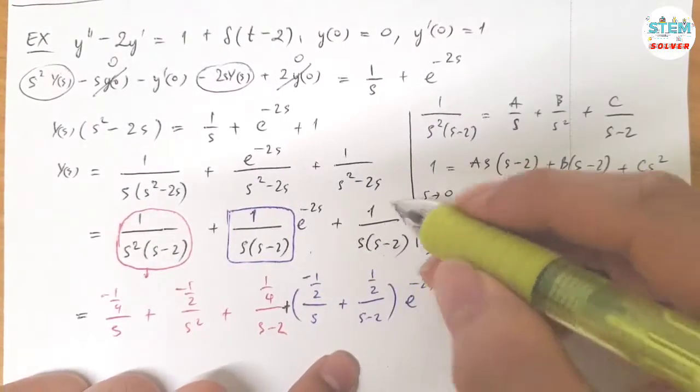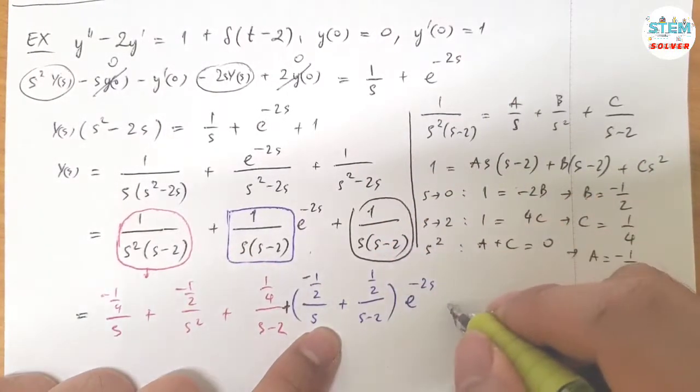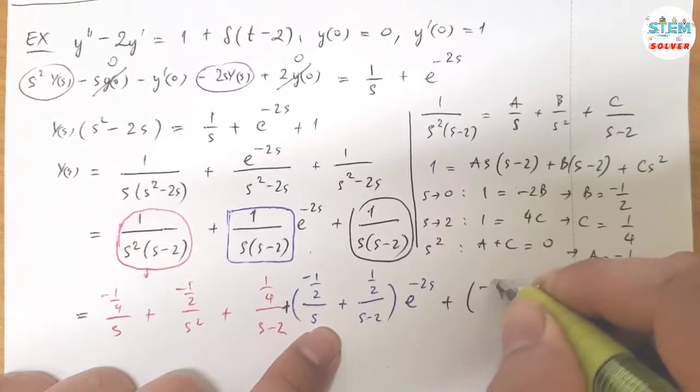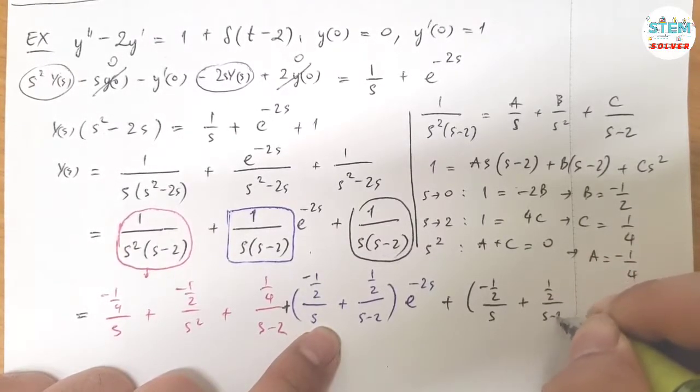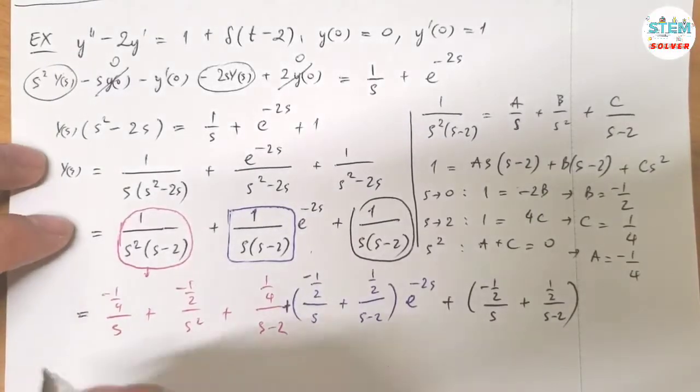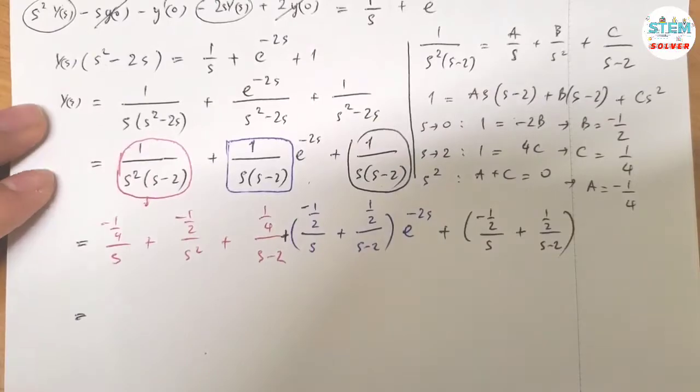And for this one, well, this exactly, it looks exactly the same as this one. So you just bring it over. Negative 1 half over S plus 1 half over S minus 2, right? Alright. We're almost done.